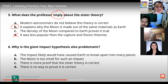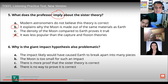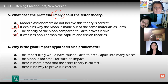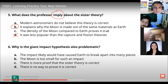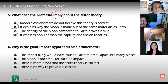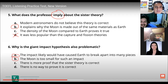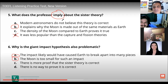Last question: Why is the giant impact hypothesis also problematic? A — the impact likely would have caused Earth to break apart; B — the moon is too small for such an impact; C — there is more proof the sister theory is correct; D — there is no way to prove it is correct. Discussion points toward D — it's a hypothesis because there's no current way to prove it correct. The answers will be given at the end of the video.